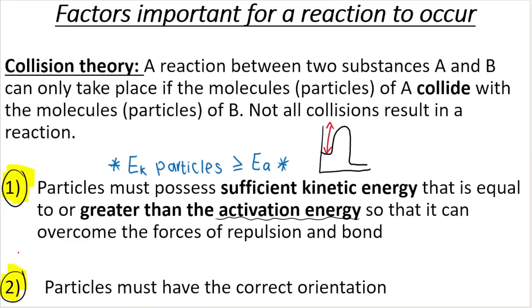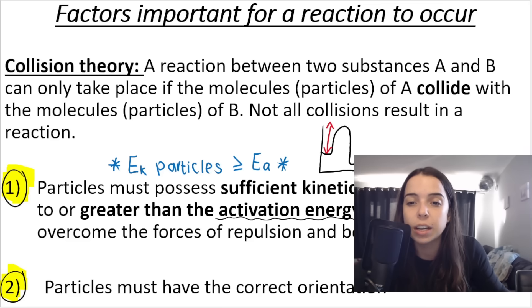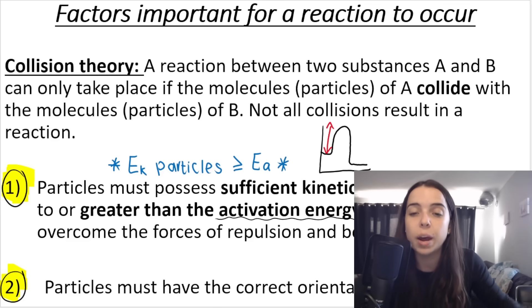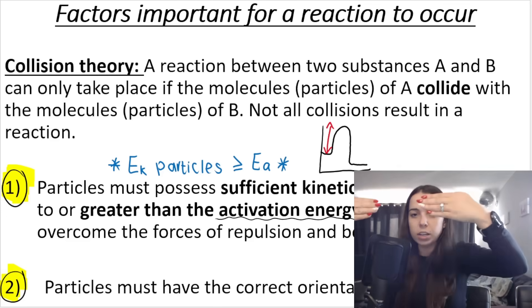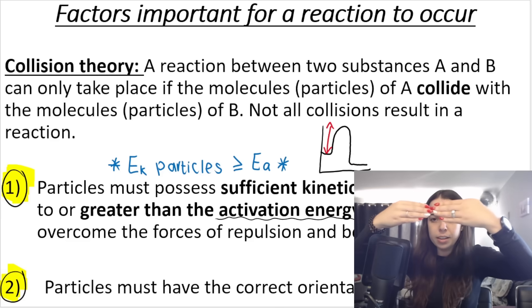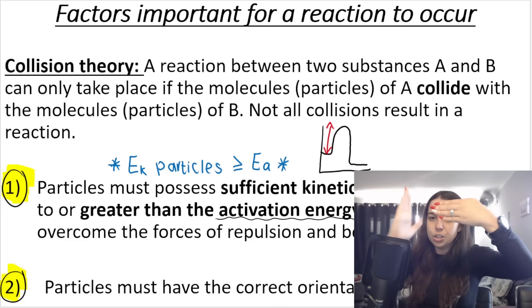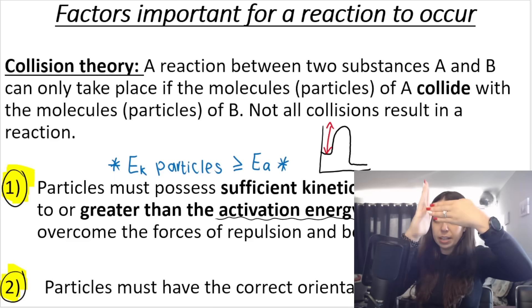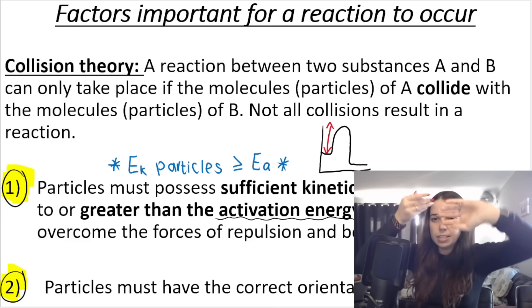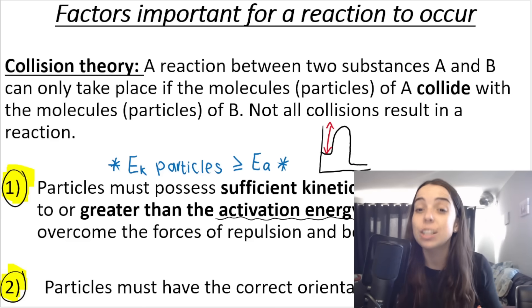The second criteria is that particles must have the correct orientation. In other words, they need to collide in a specific way. Maybe they can't collide like this — maybe the collision needs to take place like this. The orientation needs to change.